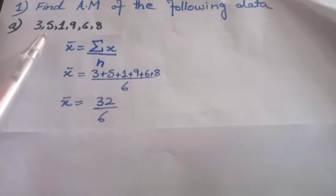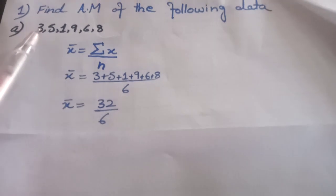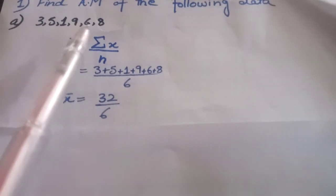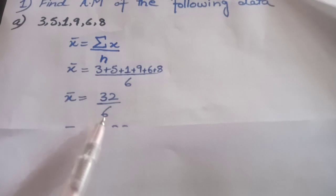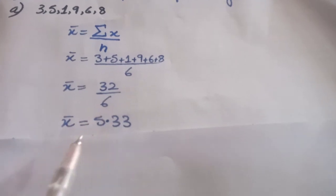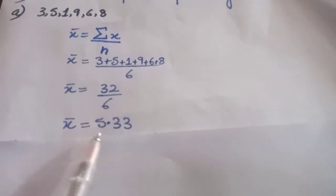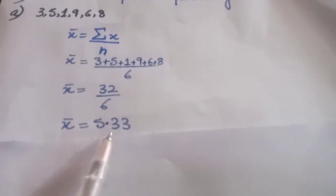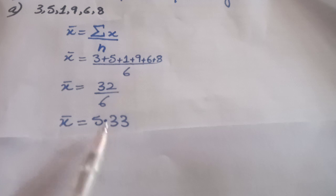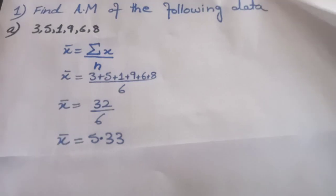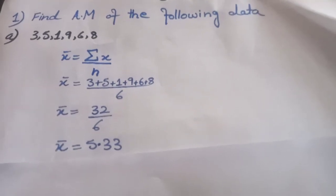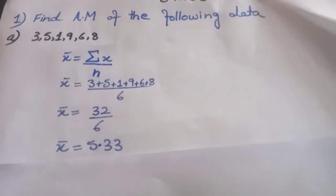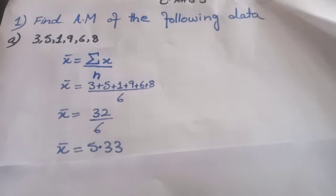Total number of observations we have are 1, 2, 3, 4, 5, and 6. After dividing, we get arithmetic mean as 5.33. So this was the method — to calculate arithmetic mean of ungrouped data.